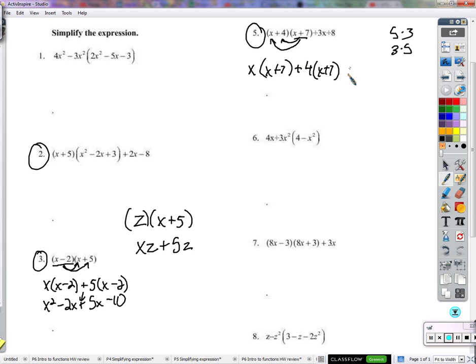Then we have this other stuff, plus 3x plus 8. Now, we distribute the x into the x plus 7, we get x squared, plus 7x, plus 4 times x, plus 4 times 7, which is 28, plus 3x plus 8.